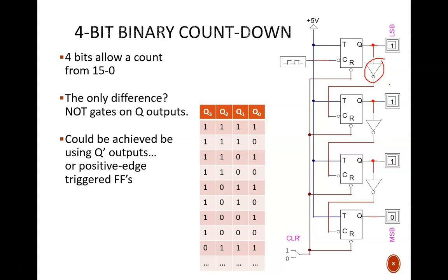The first route would be to use the Q' outputs, rather than Q. The second route would be to use positive edge triggered flip-flops, rather than negative edge.